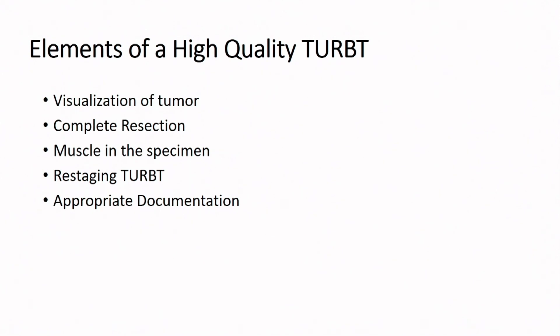The operative report is amazingly sparse sometimes. We could do better with a templated quality note that includes size, location, and number of tumors; the completeness of resection; whether muscle was present in the specimen — because the pathologist may not report it — and the presence or absence of perforation. In summary, the elements of a high-quality TUR include visualization, complete resection, muscle in the specimen, restaging where appropriate, and documenting what you've done.